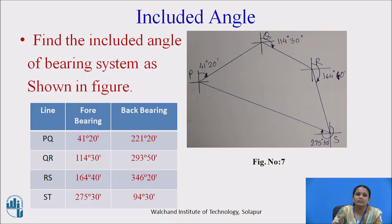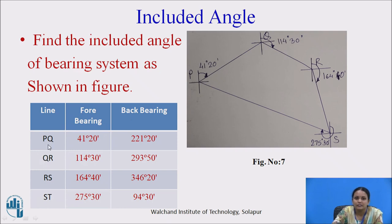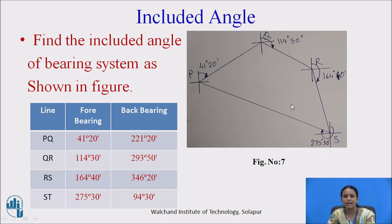Now, how to calculate the included angles? The bearing system is given for a closed traverse. First, you have to draw the traverse by using the bearings. Line PQ has forebearing 41 degrees 20 minutes from north. Line QR has forebearing 114 degrees 30 minutes, also with respect to north direction. Then, calculate included angles P, Q, R, and S.